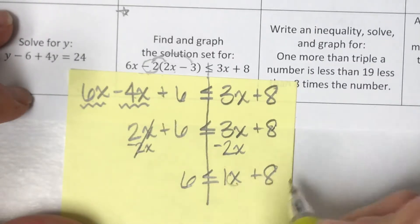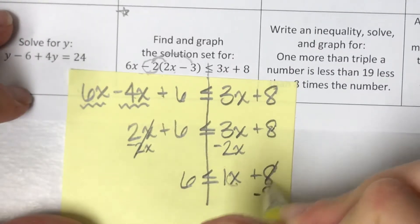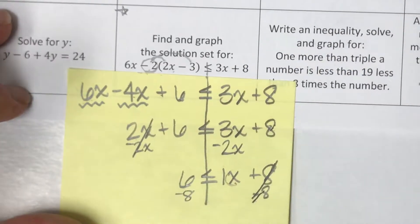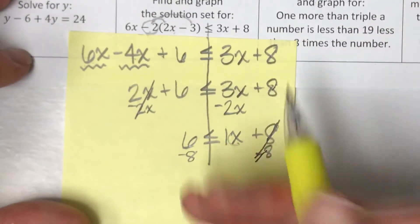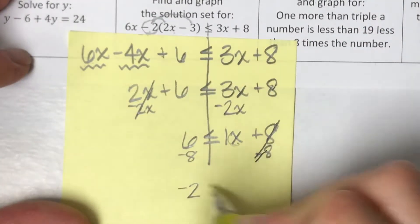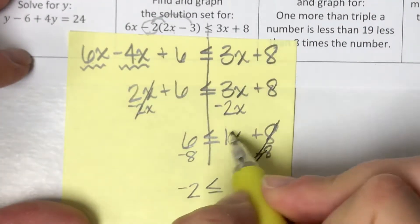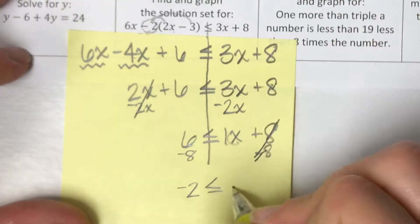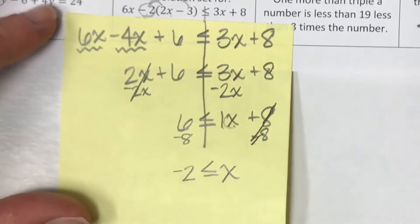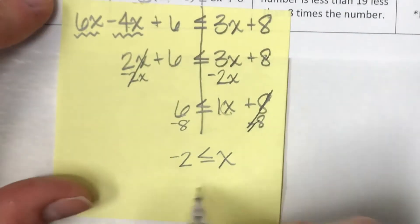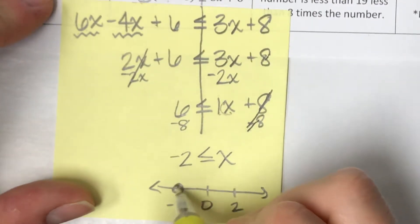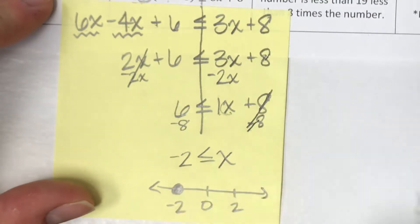Now to isolate the x, I'm going to subtract 8 so that it cancels out. Subtract 8 over here. 6 minus 8 becomes negative 2 is less than or equal to the 1x. I don't really need to write the 1. I can just put an x which means I'm done.